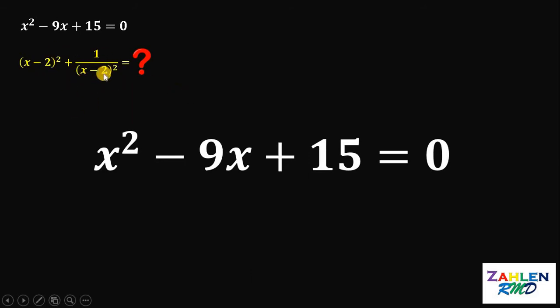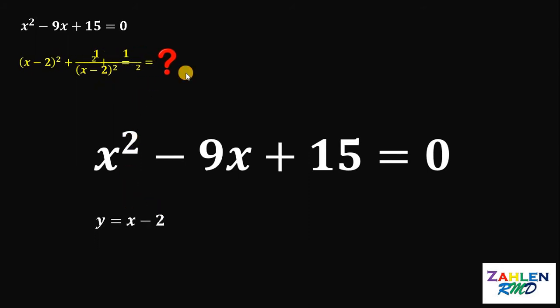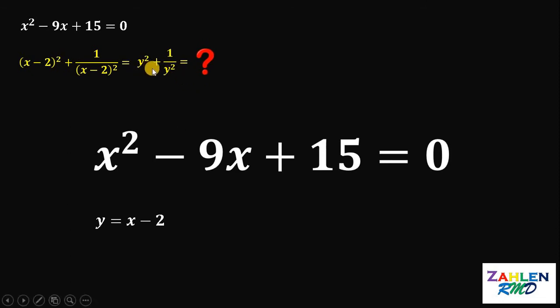To simplify this, let y be equal to x minus 2. Therefore, what we need to find now is the value of y squared plus 1 over y squared.